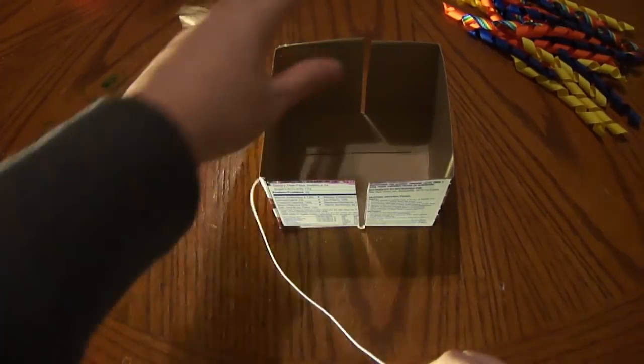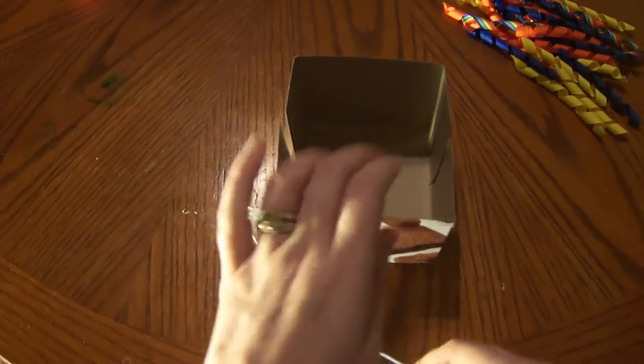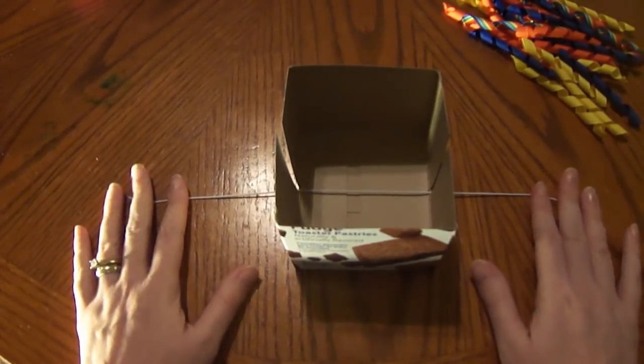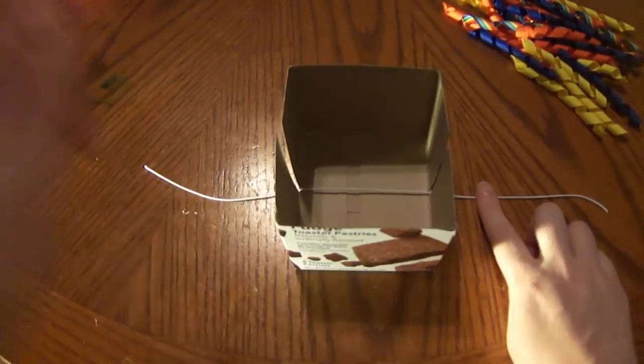Before we start assembling our corkers into the box, you're going to need to take your elastic and insert it through your slits, like so. Because this is what's going to hold our bow in place.